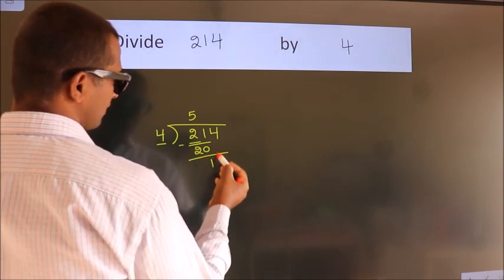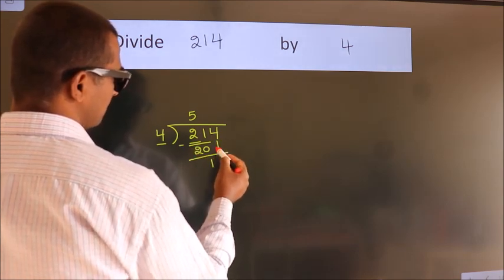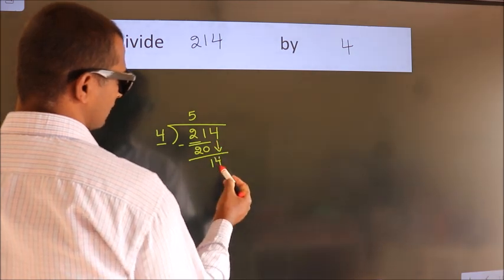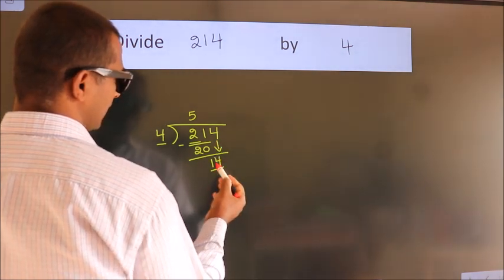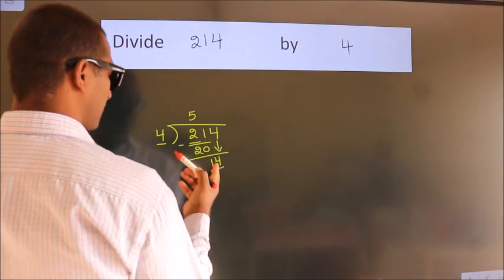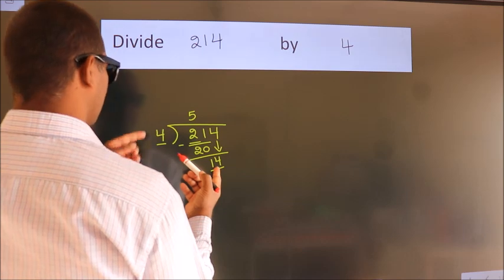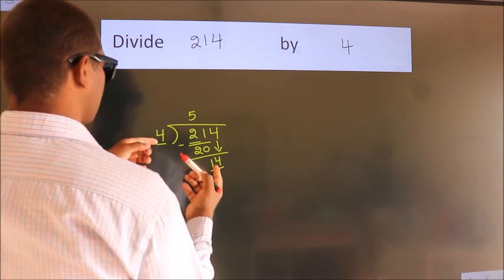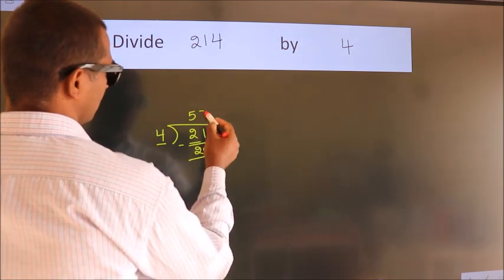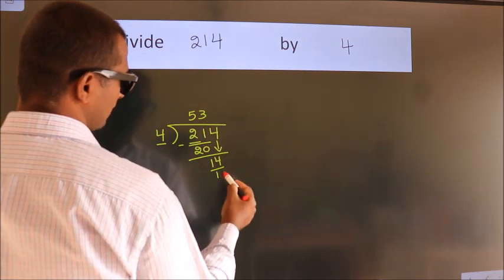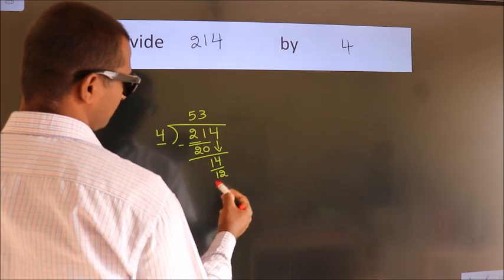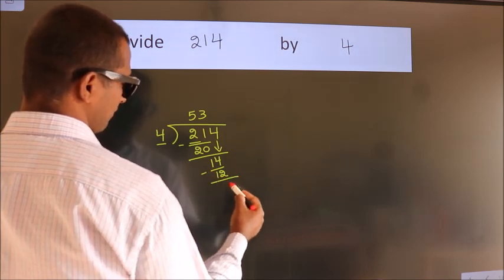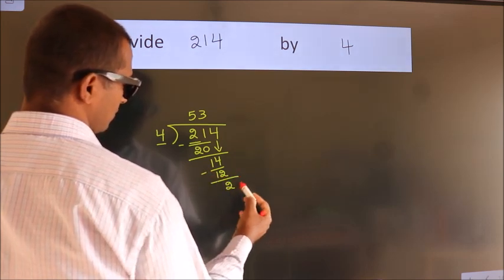After this, bring down the beside number, so 4 down — so 14. A number close to 14 in the 4 times table is 4 threes, 12. Now we subtract. We get 2.